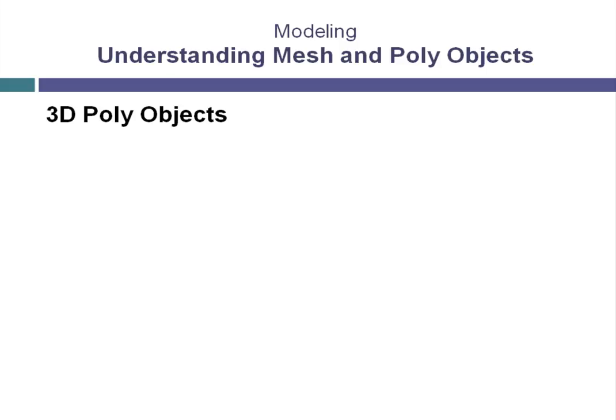You've learned about creating and editing 2D shapes in 3ds Max, a great basis for starting with 3D objects. Now we are going to start working directly with 3D objects. This is probably one of the primary workflows you will have in the scene creation process. Two primary forms of 3D objects that you will be working with generally are the editable poly and the editable mesh objects.